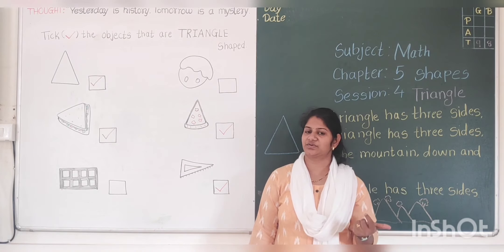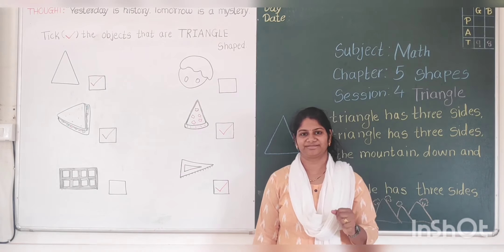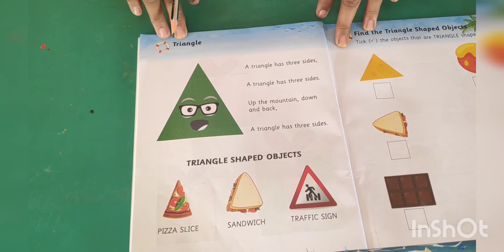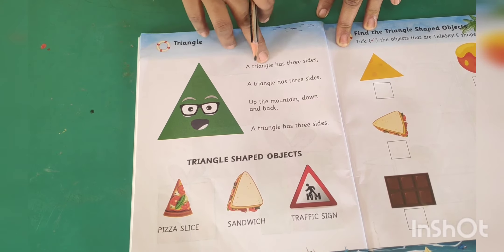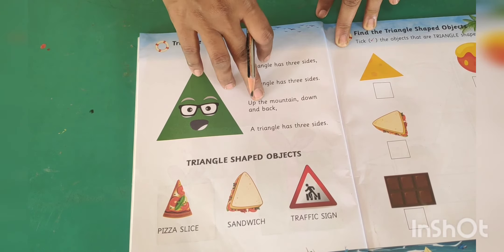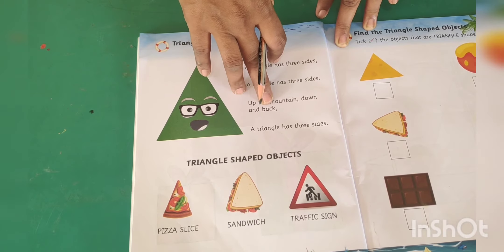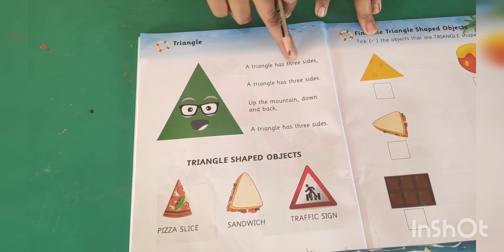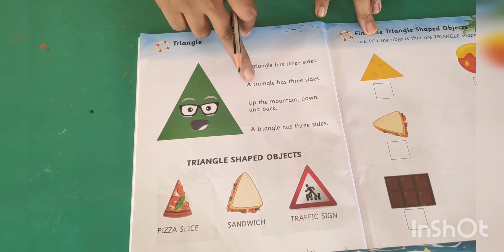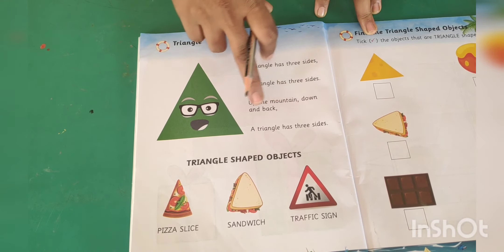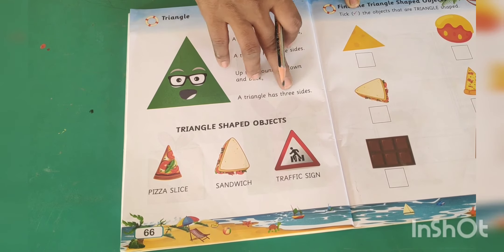You also have to do it in your textbook. This is your math textbook, page number 66. T-R-I-A-N-G-L-E. Triangle. This is a triangle. A triangle has 3 sides. Up the mountain, down and back. A triangle has 3 sides. One more time. A triangle has 3 sides. Up the mountain, down and back. A triangle has 3 sides.